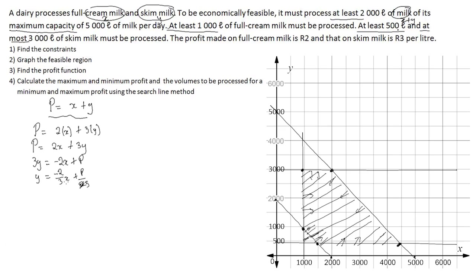The coefficient of x gives us the gradient of the search line: y equals negative two-thirds x plus P over 3. Looking at the graph, the scale goes up to 2000 and 3000, so we multiply the gradient by 1000, giving us 2000 over 3000. That is the gradient we use to draw the search line on our graph.